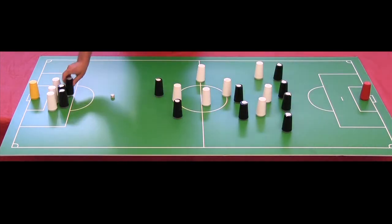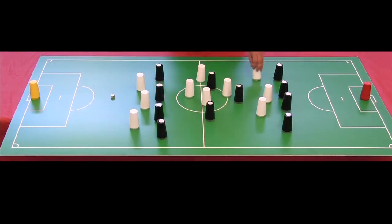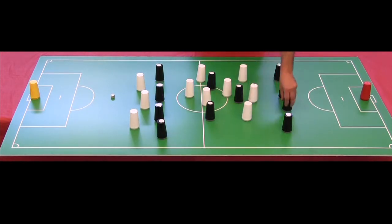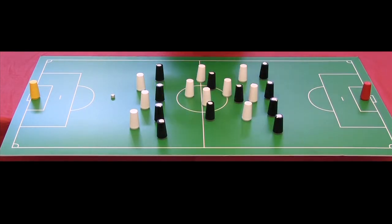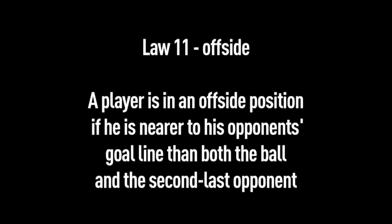What the offside law does is force these players to stay somewhat connected, so the field starts to look more like this — players are much more connected and there's a lot less space. That means wherever the ball is, there's going to be pressure on it fairly quickly, which keeps the game moving faster and puts a higher technical demand on the players. That is the purpose of the offside law.